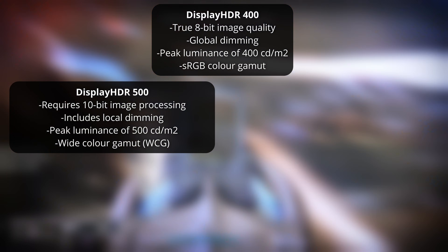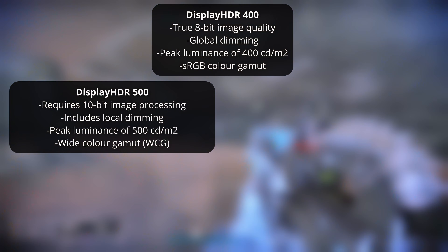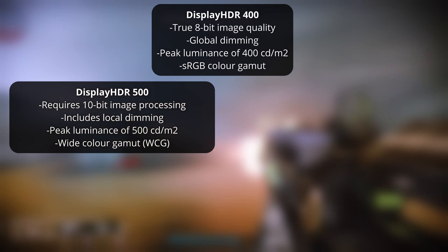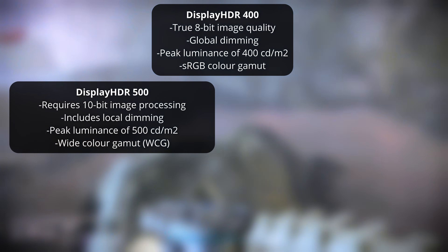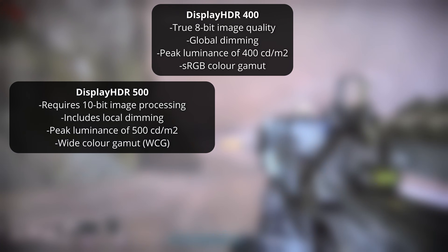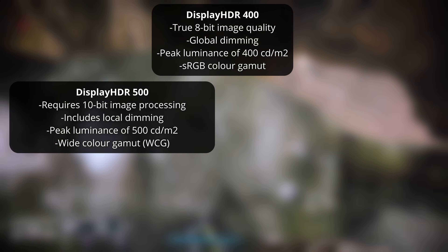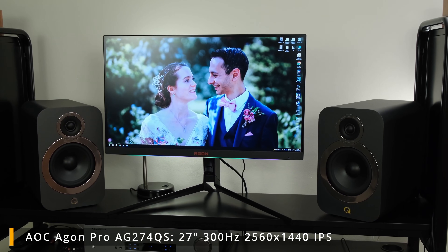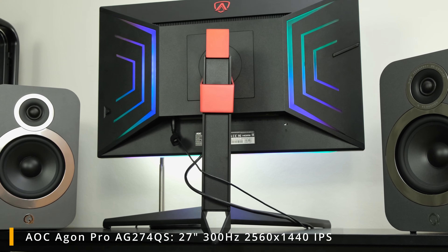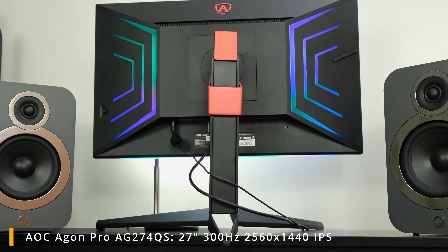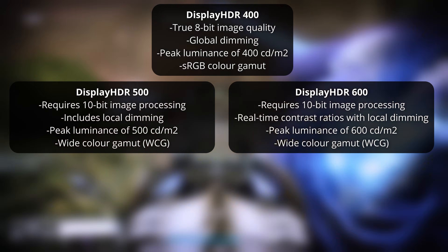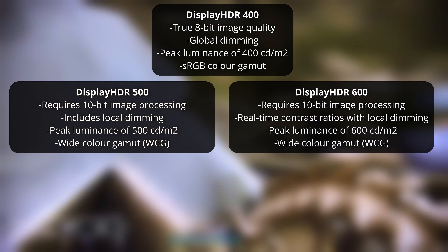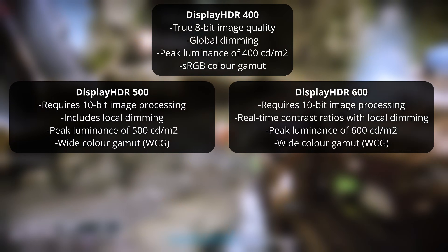Where things get interesting is at Display HDR 500 and above. Here you get a peak luminance of 500 nits, a wide color gamut, local dimming, and 10-bit image processing. The same can largely be said for Display HDR 600, which is present on the AOC Agon Pro AG274QS — the reviewer's personal daily driver — offering 600 nits peak luminance, real-time contrast ratio with local dimming, and 10-bit image processing.